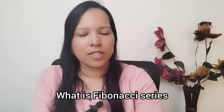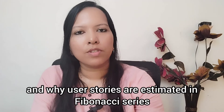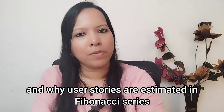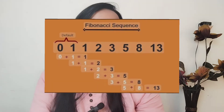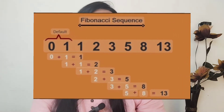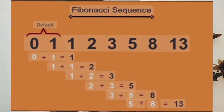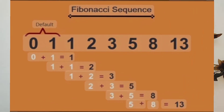What is the Fibonacci series and why are user stories estimated in Fibonacci series? The Fibonacci series is a sequence of numbers that starts with 0 and 1, and all following numbers are the sum of the previous two numbers — so it goes like 0, 1, 2, 3, 5, 8, 13, 21, 34, and so on.